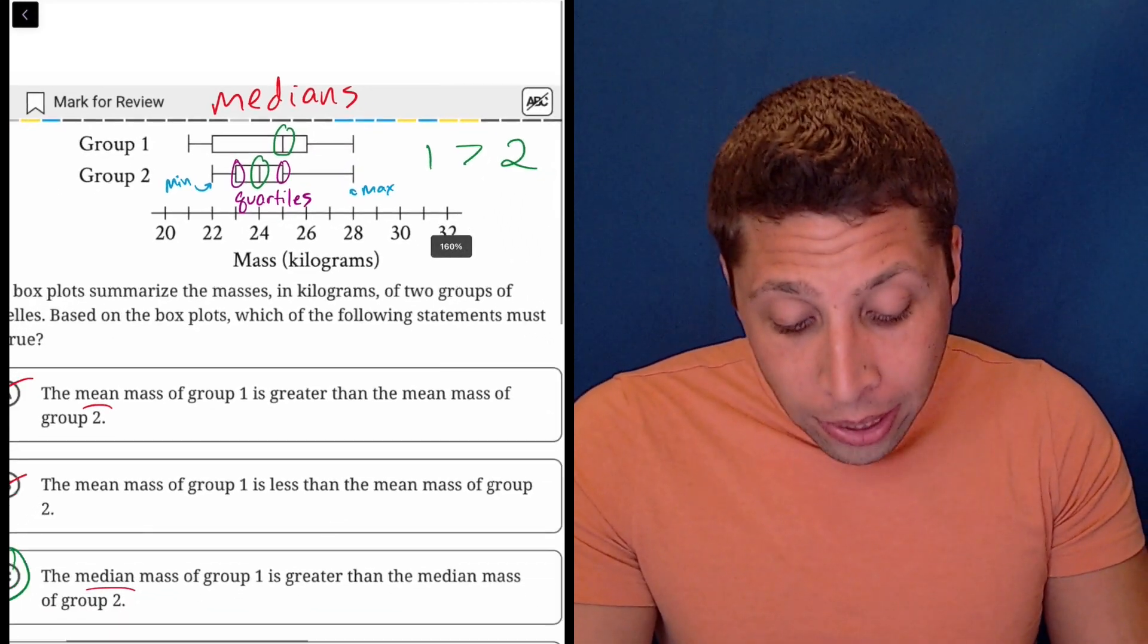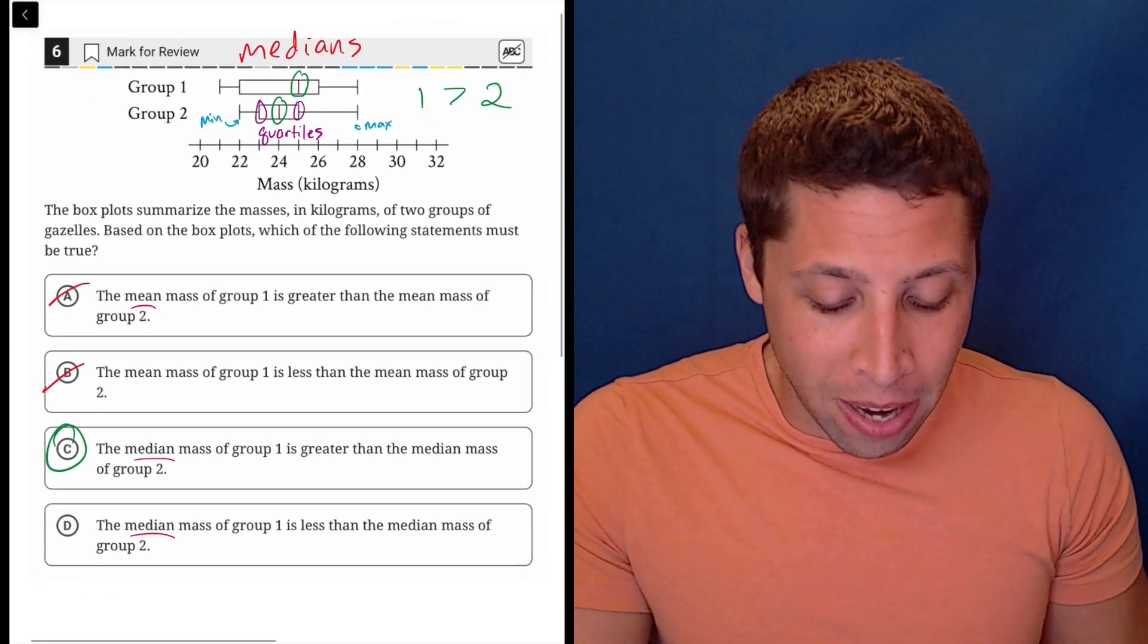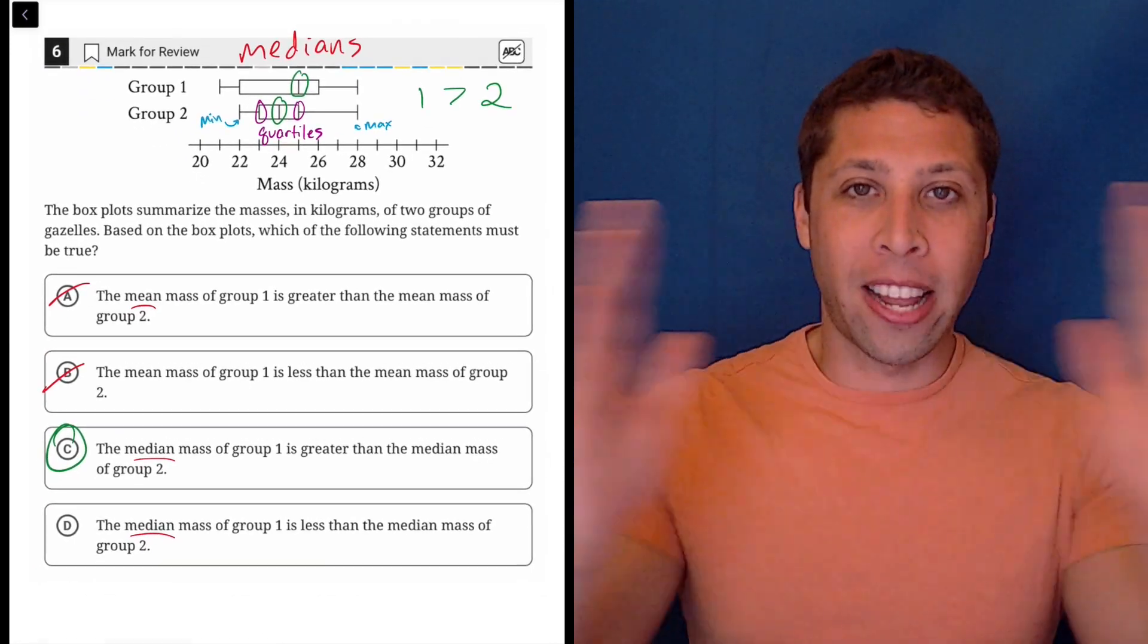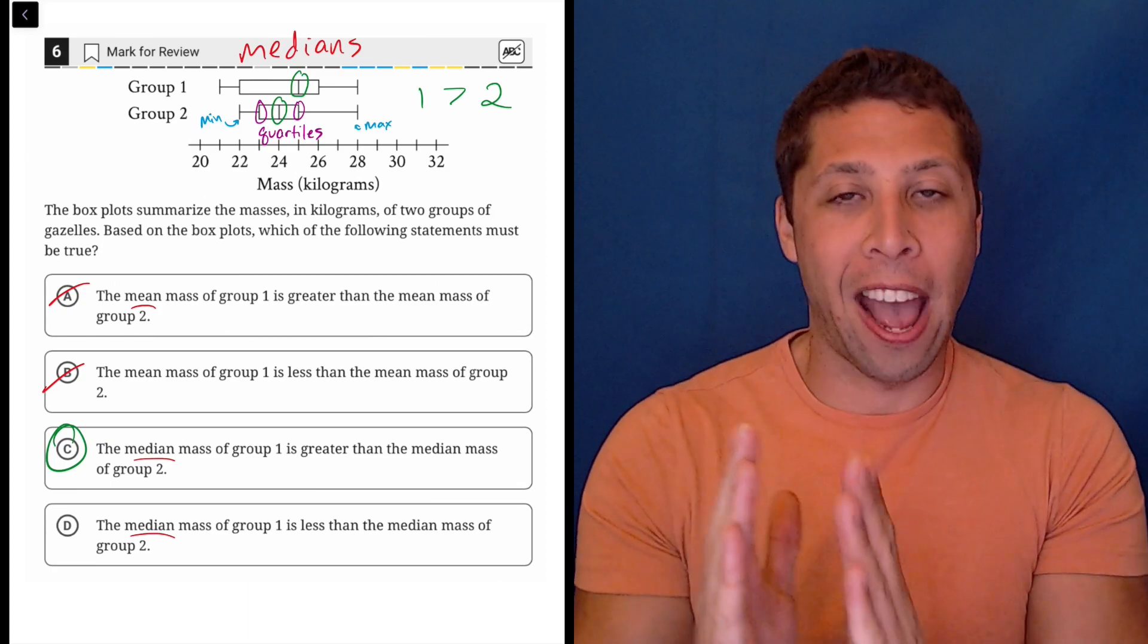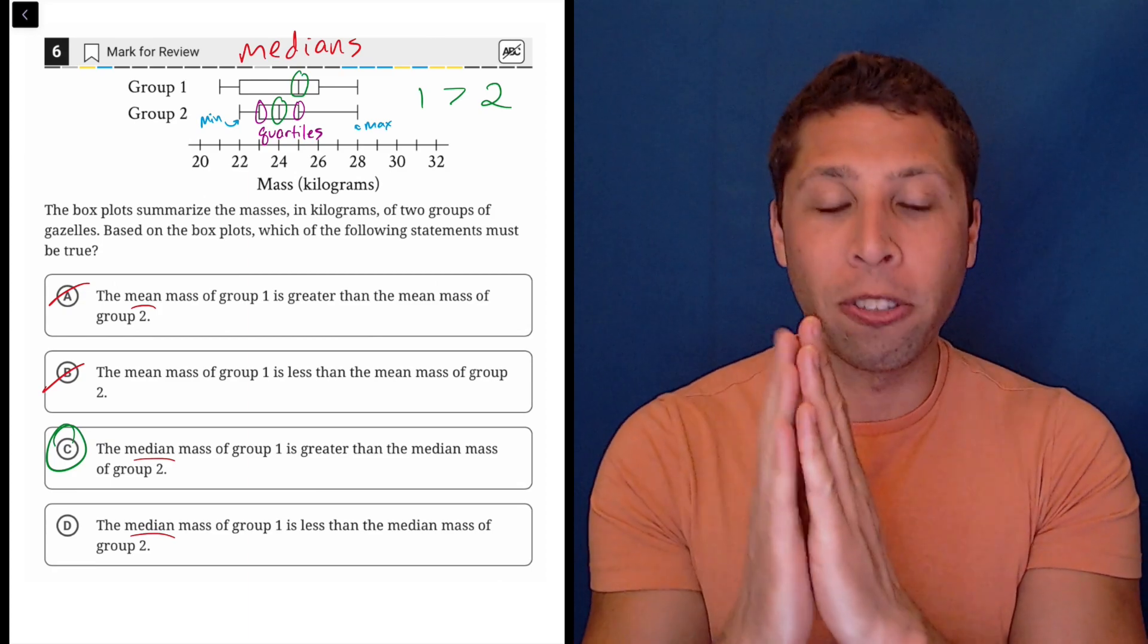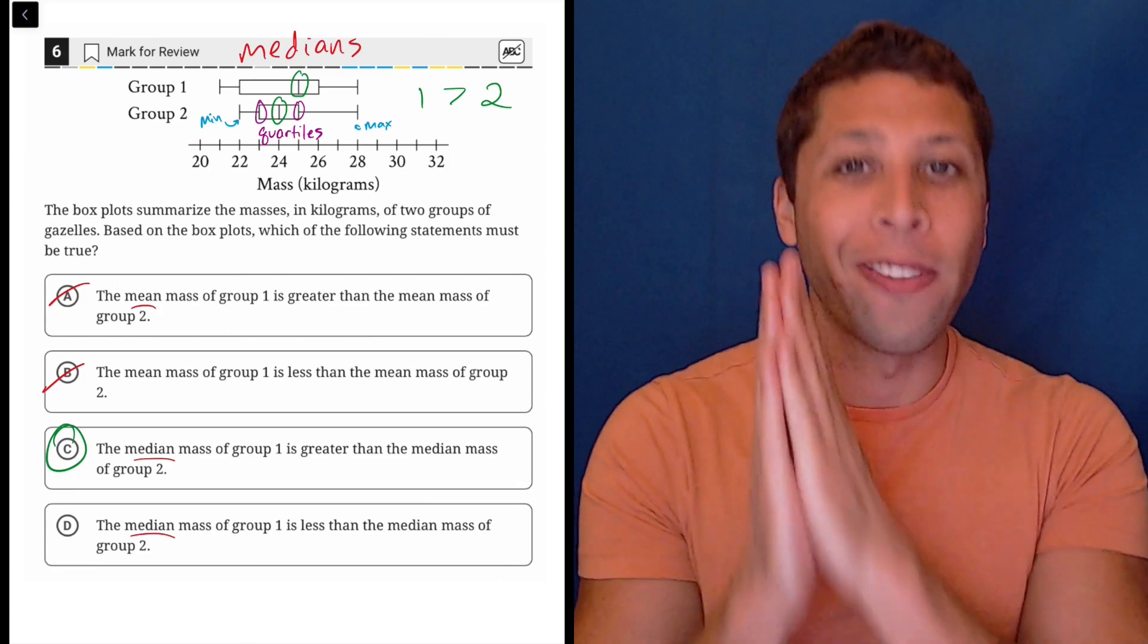The way to really think about it is they are also medians. Remember, a median takes a set of data and splits it in half and says half the numbers are smaller than this, half the numbers are bigger than this. It finds the middle number.